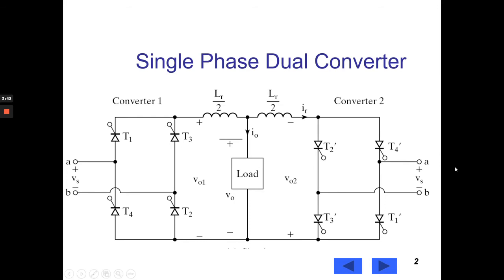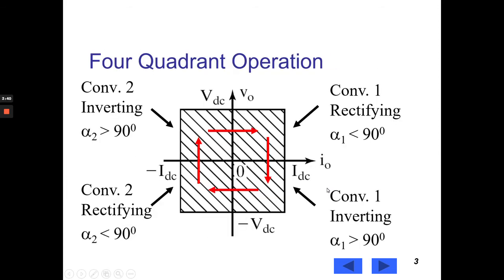Similarly, about converter 2. The second full converter operates in the third quadrant of the load voltage, load current characteristics. For alpha less than 90 degrees, the average load voltage and load current both are negative. The direction of power flow is from source to load and the DC machine works as a motor. The converter operates in the third quadrant.